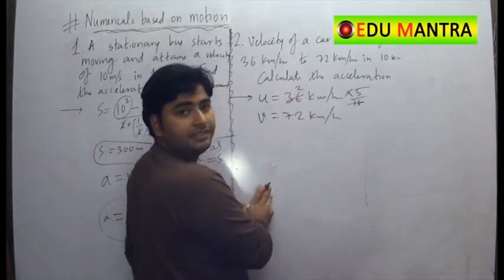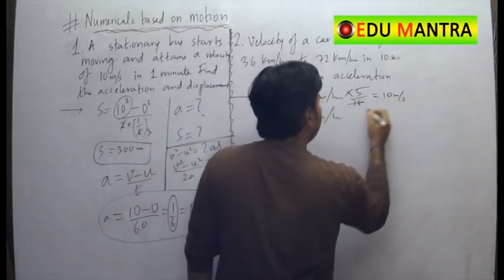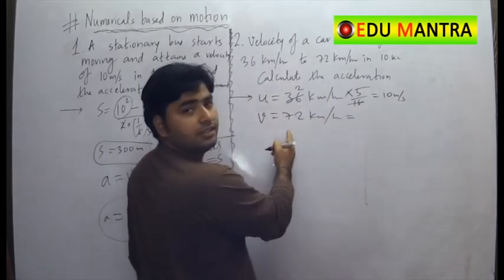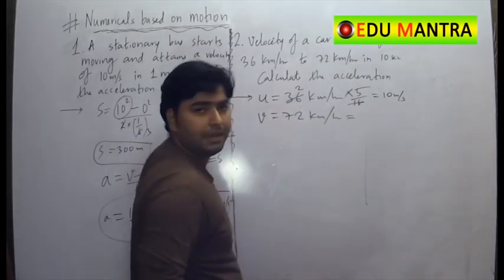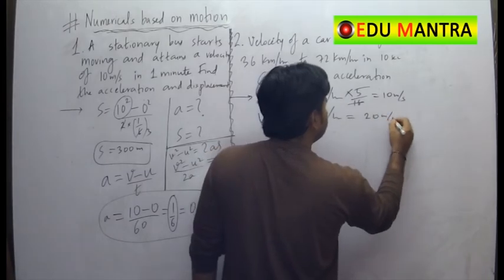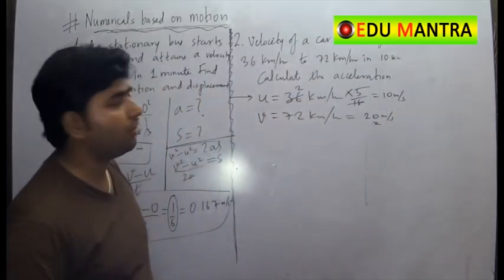So if I multiply this by 5 by 18. 18, 2s are 36. So 5, 2s are 10. So this is 10 meter per second. And if you convert this, if you multiply this by 5 by 18, you get it as 20 meter per second. So these are the initial and final velocities given.